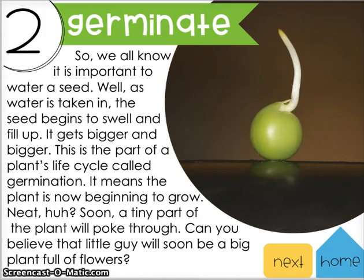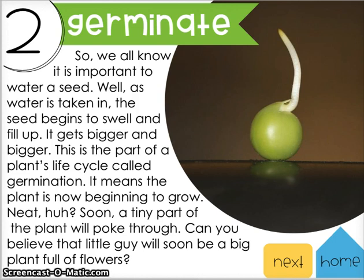The next stage is stage two, called the germination stage. As water is taken in, the seed begins to swell and fill up. It gets bigger and bigger, and this part of a plant's life cycle is called germination — it means the plant is now beginning to grow. Soon a tiny part of the plant will poke through. Can you believe that little sprout will soon be a big plant full of flowers?